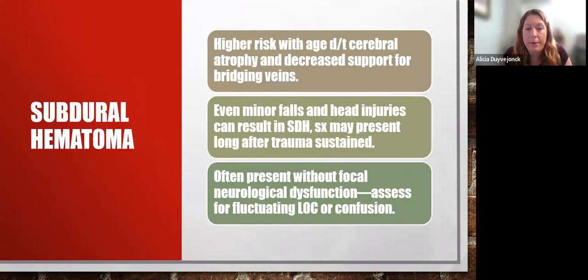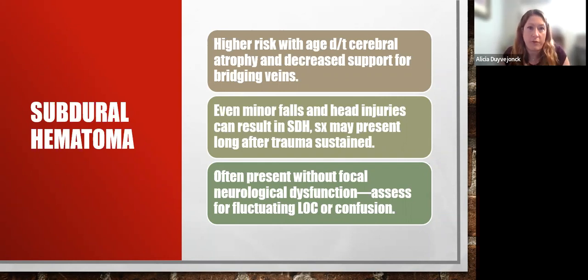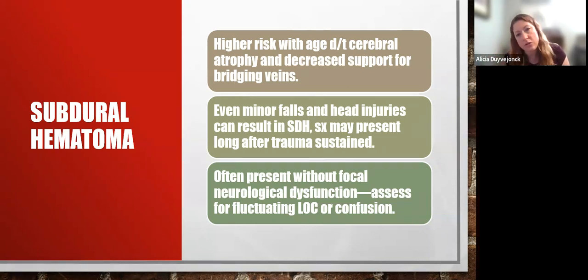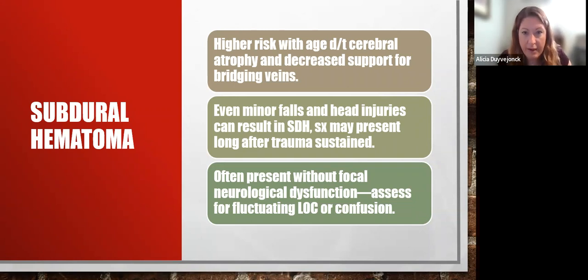Subdural hematoma often occurs in older populations due to cerebral atrophy that decreases support for the bridging veins in the cranium. Even minor falls or seemingly inconsequential head injuries can result in subdural hematoma. Symptoms may present long after the trauma — the patient may be fine initially but develop fluctuating level of consciousness, confusion, or gait disturbances days later. Definitely watch for delayed symptoms in older patients presenting with falls or head injury.